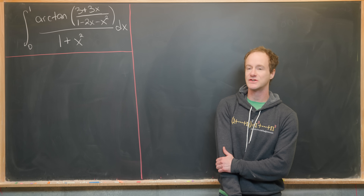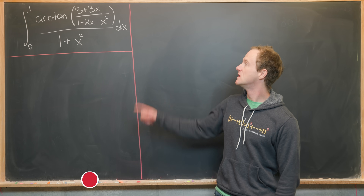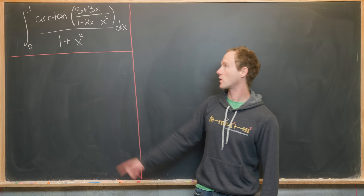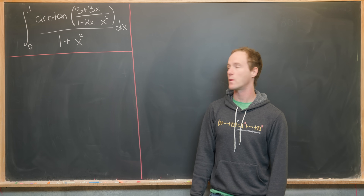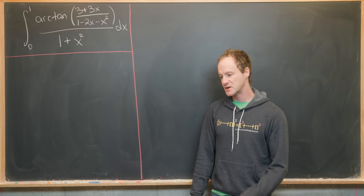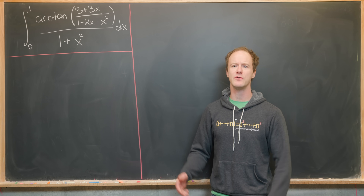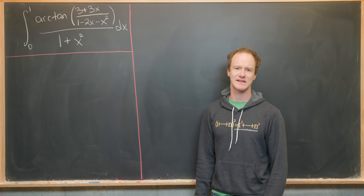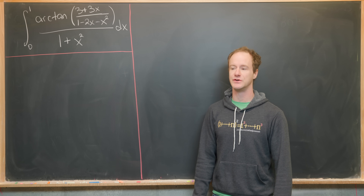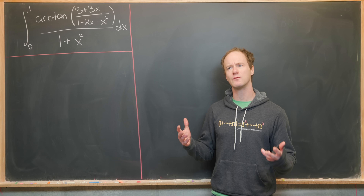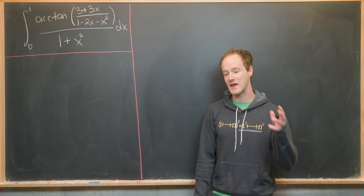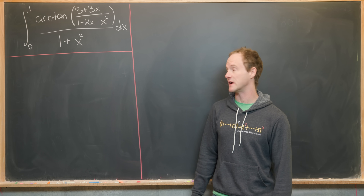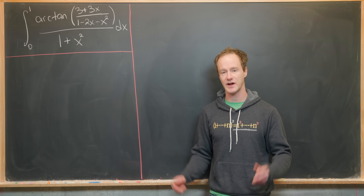Here we're going to look at a viewer-suggested integral known as the Glacier Integral. We've got the integral from 0 to 1 of arctan of (3 + 3x) / (1 - 2x - x²), all over 1 + x². This problem appears in a lot of textbooks, including the classic Edwards calculus textbook, and they give you a substitution to use. That makes me believe the substitution probably came first and the integral was constructed from it. So we're going to need a substitution in order to solve this.